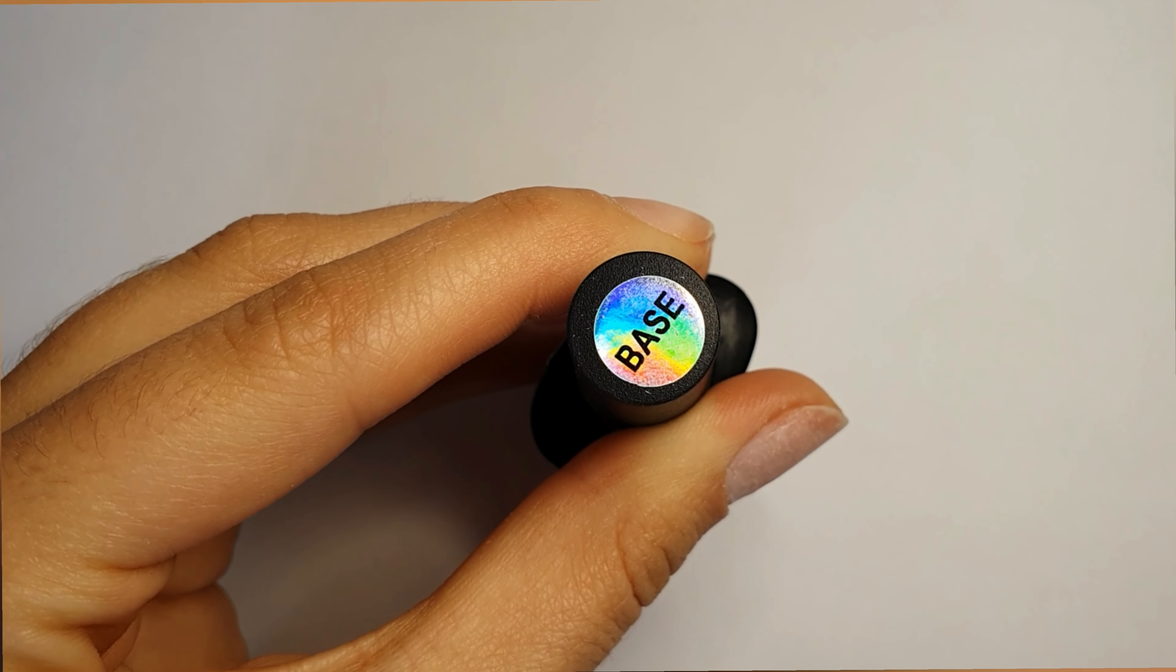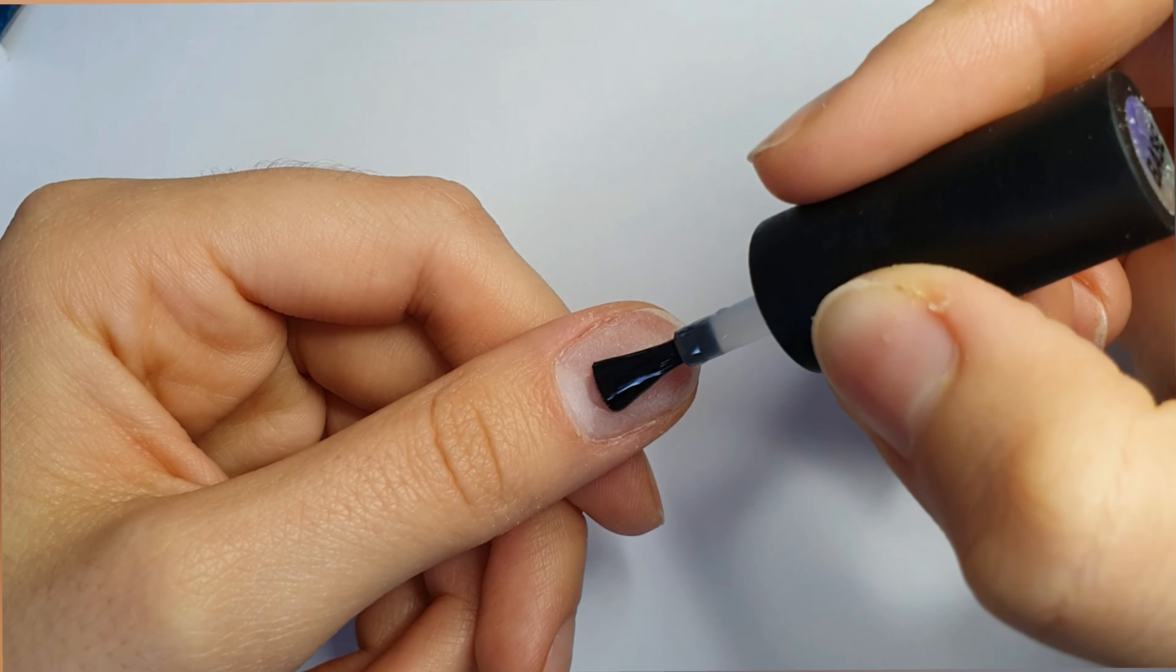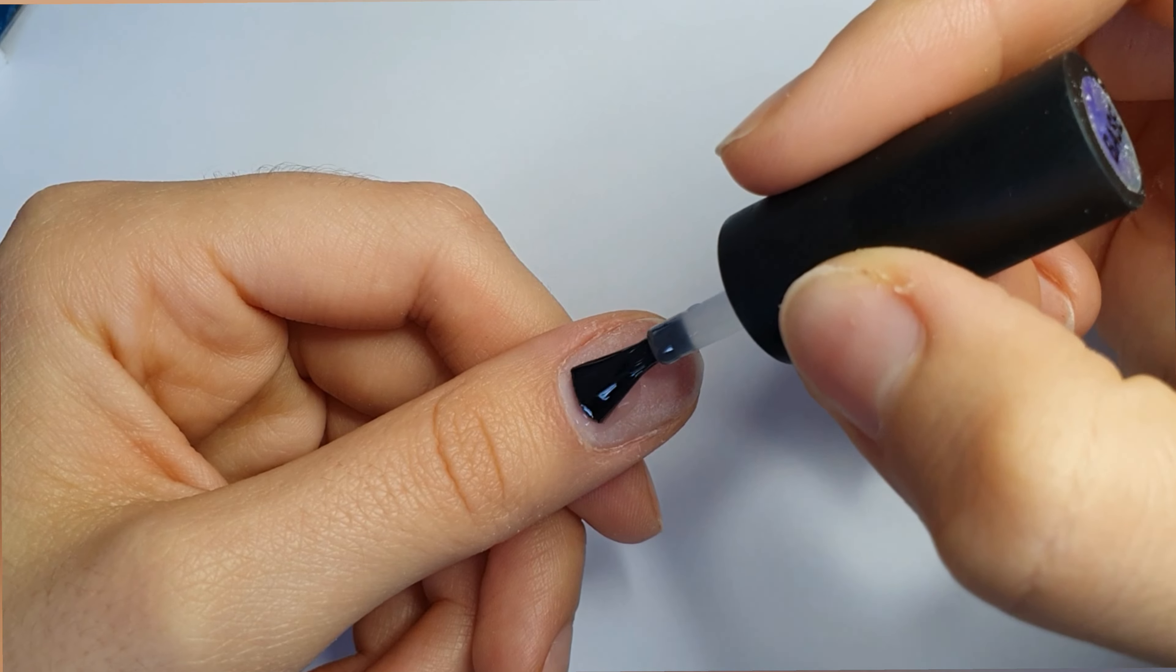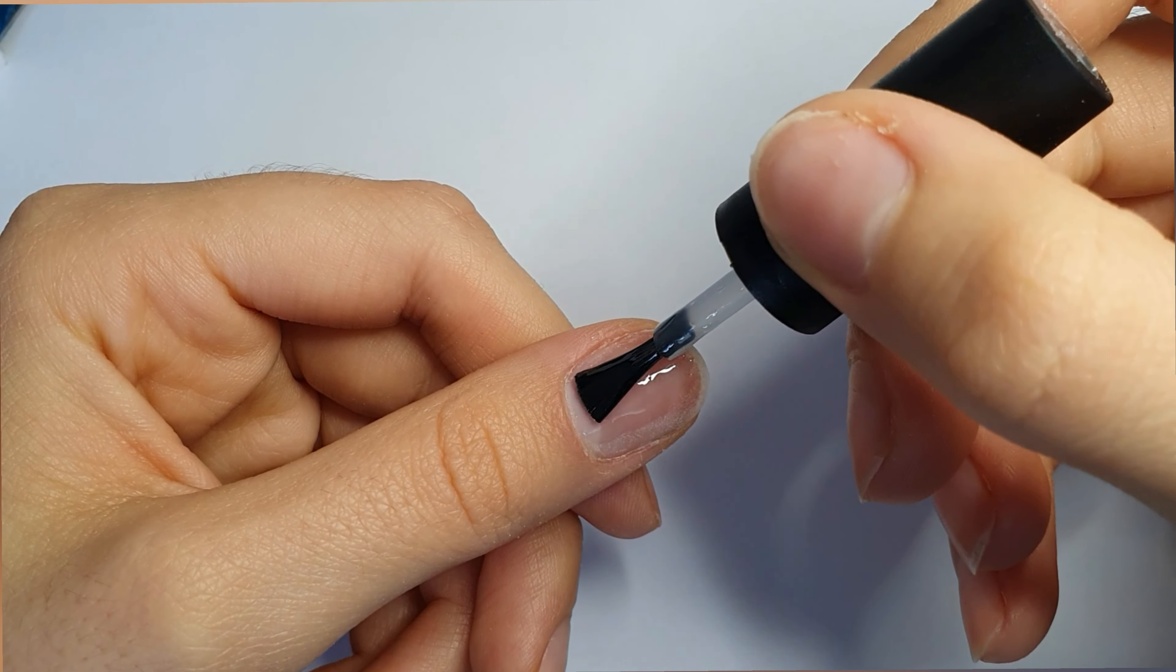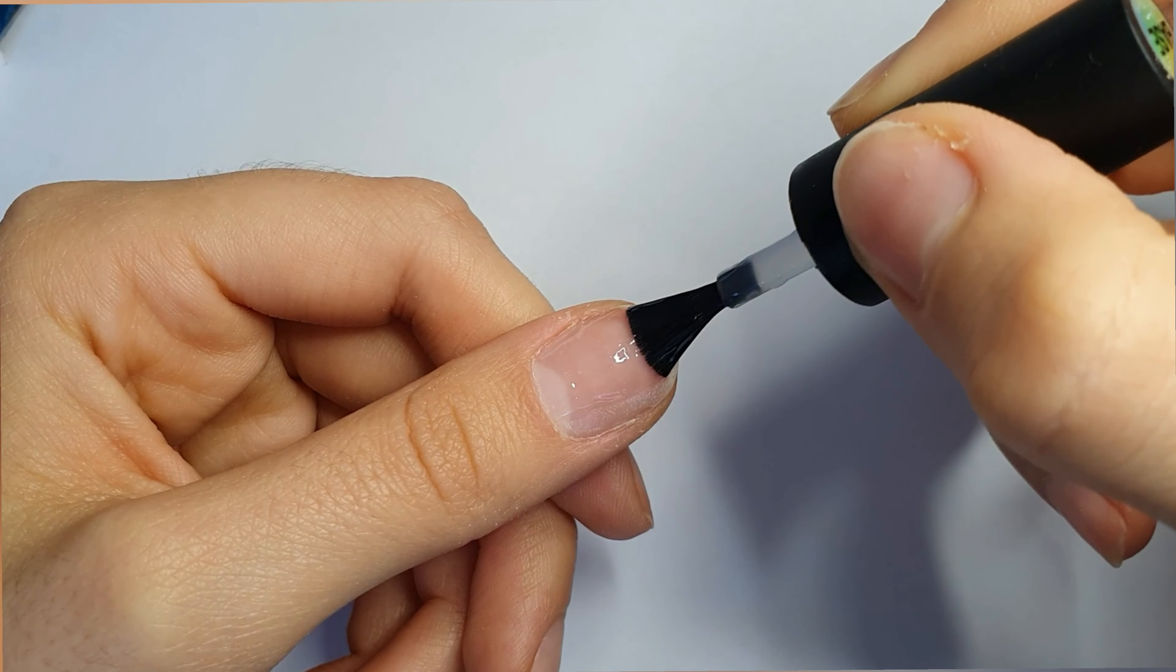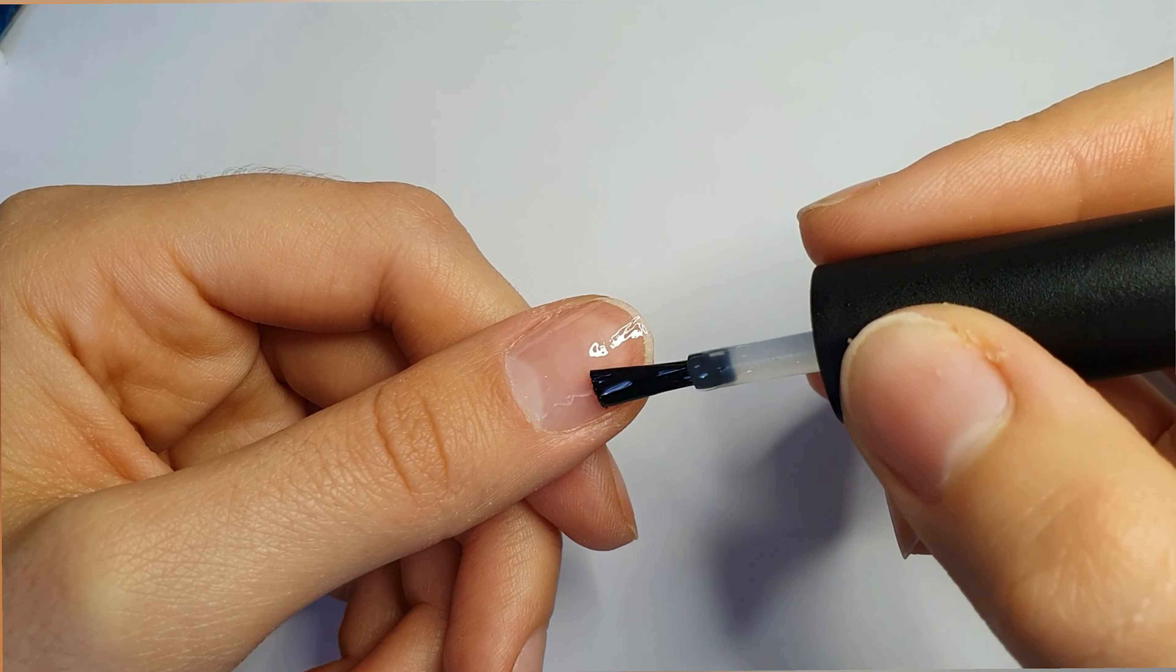Now we are going to apply base coat. It is important that you make a thin layer of base coat because it doesn't need to be very thick, it's just the base of the nail. While you are applying base coat, make sure it doesn't touch any part of your skin.